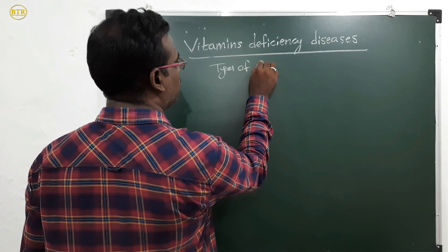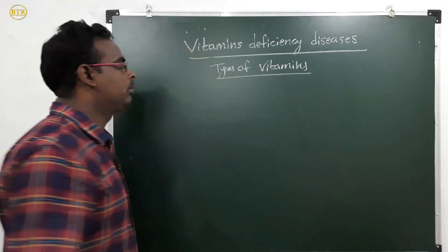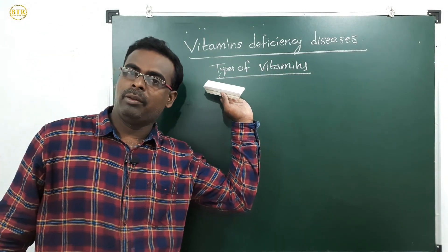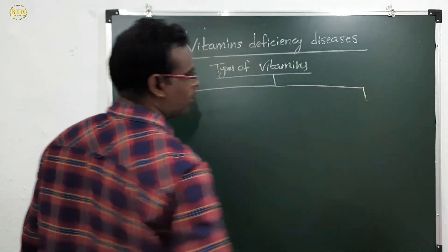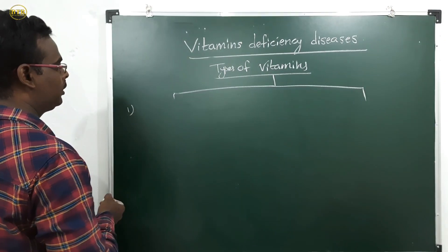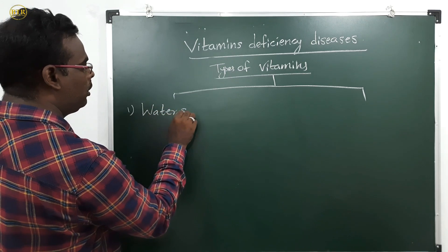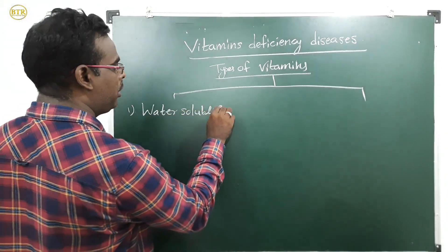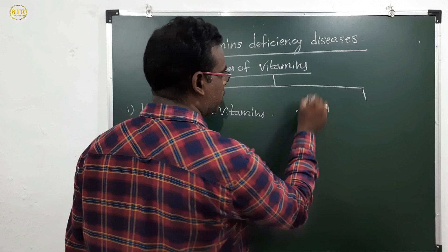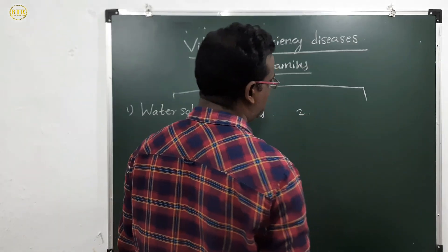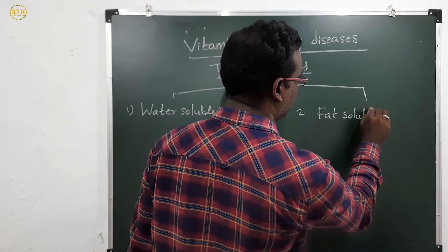Now let us study about the types of vitamins. Vitamins are divided into two types. First, some vitamins dissolve in water — they are called water-soluble vitamins. Second, some vitamins dissolve only in fat — they are called fat-soluble vitamins.